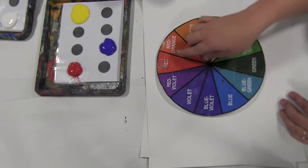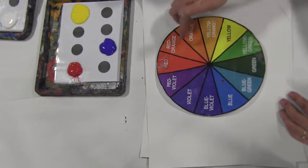For example, red and violet will blend together, red and orange, red and yellow will blend together and so on.